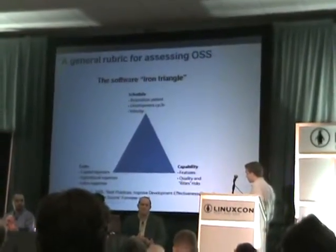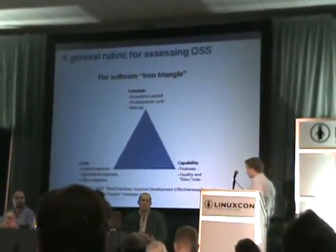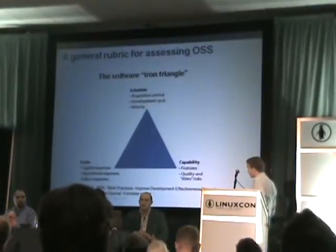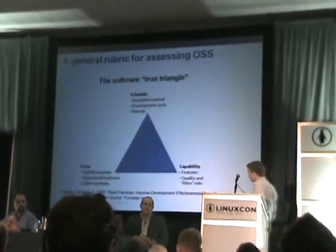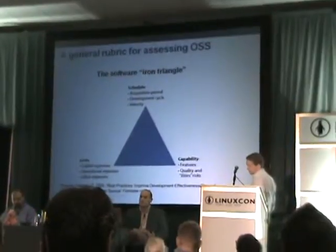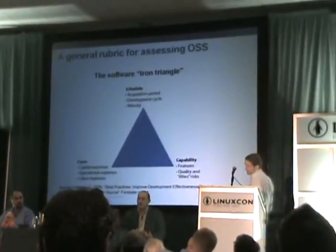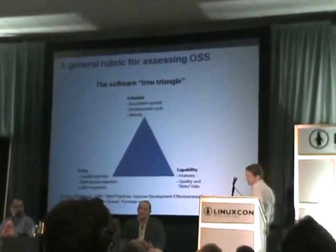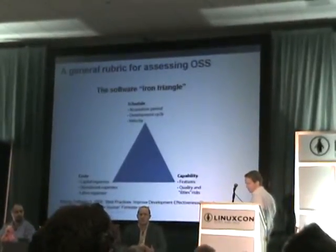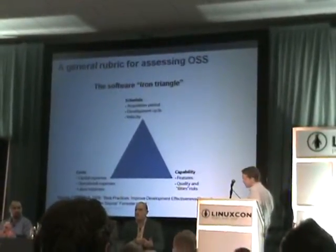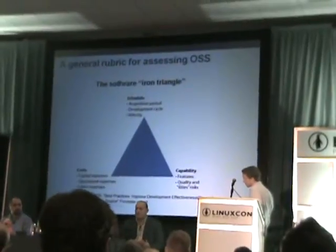From a cost perspective, we do see organizations that are saving millions in terms of capital expenses. Sometimes they see increases in operational expenses, and that's something that realistically you have to deal with. And we sometimes see increases in labor expenses. But these are all the dimensions that you have to vary when you talk about the reality of open source costs.